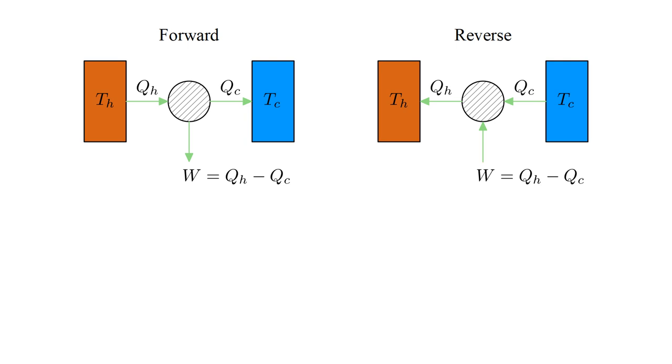For the cycle run in the reverse direction, the directions of energy flow are reversed. Work W is done on the system, with the result that heat Q cold is extracted from the cold reservoir, and heat Q hot is delivered to the hot reservoir. By the first law, Q hot equals Q cold plus W. An interpretation of this process is to say that we have used mechanical work to make heat do something it does not do spontaneously, flow from cold to hot. We are pumping heat from the cold reservoir to the hot reservoir. Accordingly, we can call this process a heat pump.